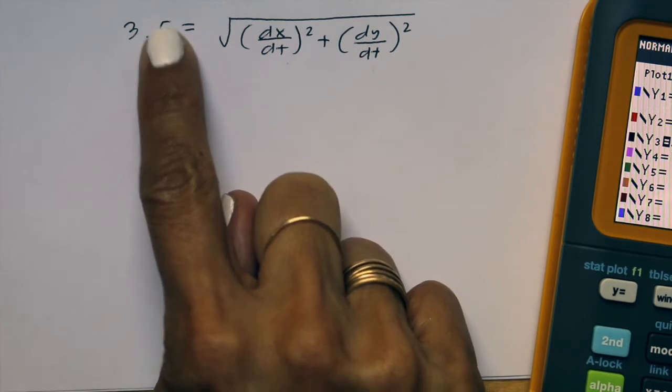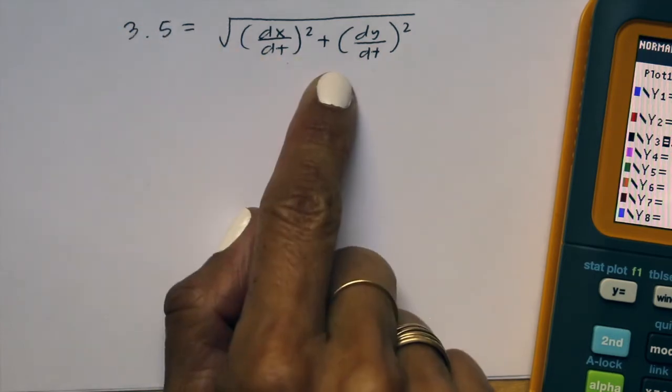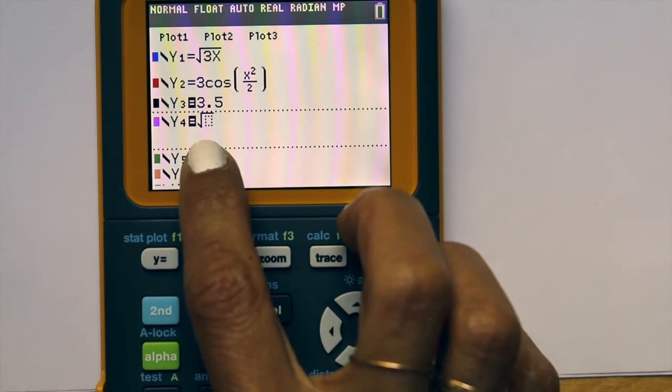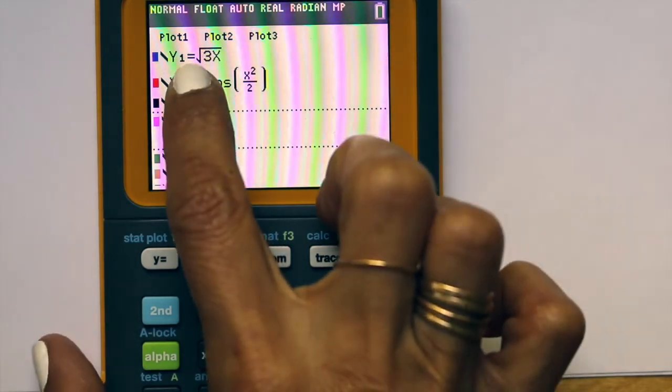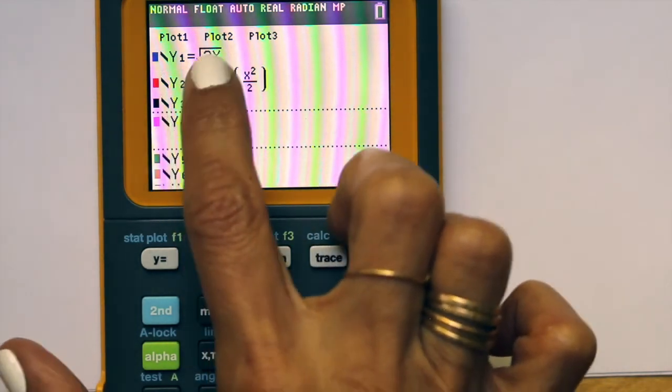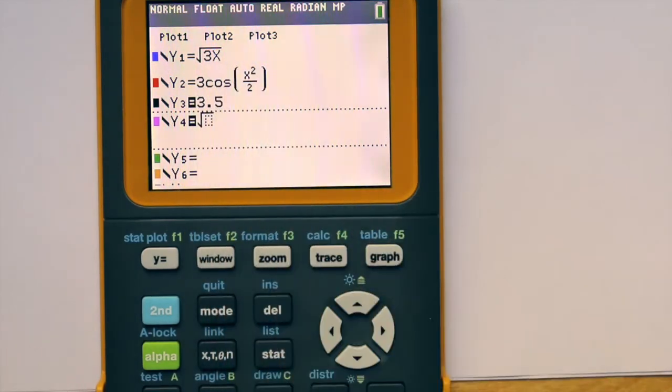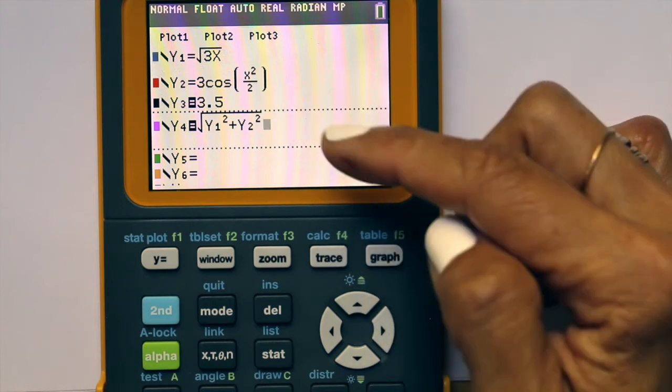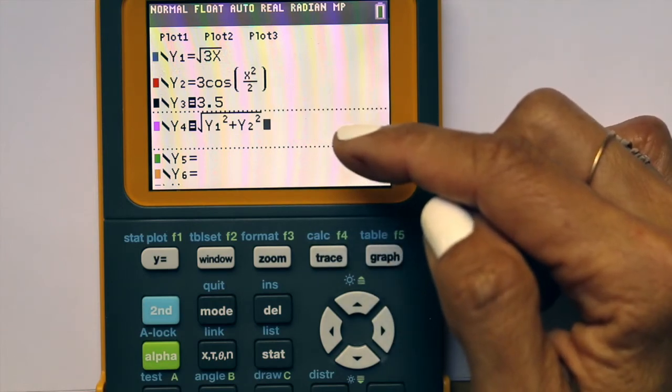We need to solve this equation, so I'm going to type this as one of the y's and this as another y. I want the square root of dx/dt squared plus dy/dt squared, so that's actually y1 and y2 as our dx/dt and dy/dt respectively. Now I have both sides of the equation as our y3 and y4.